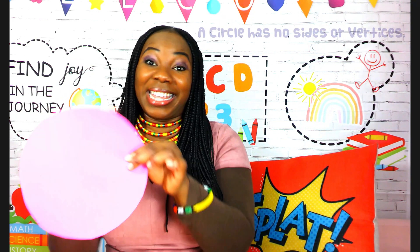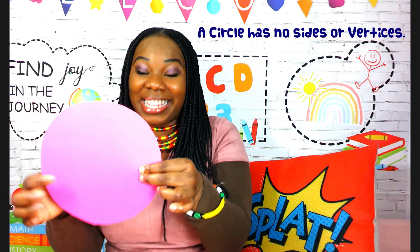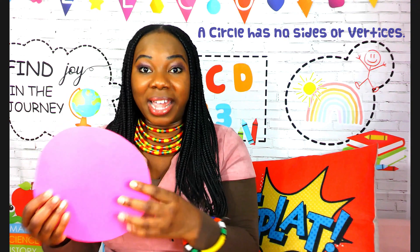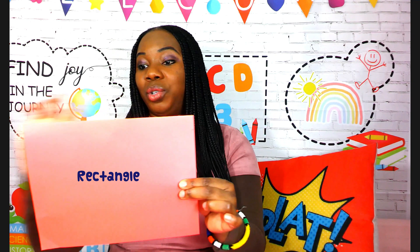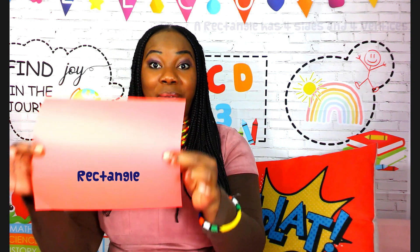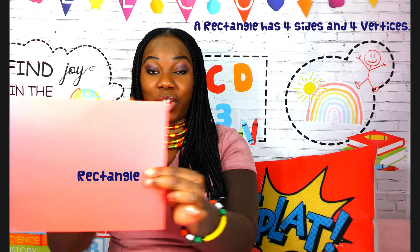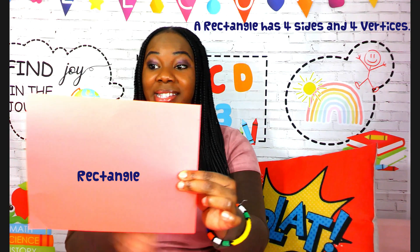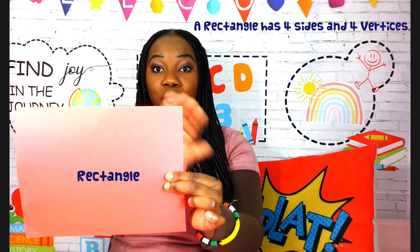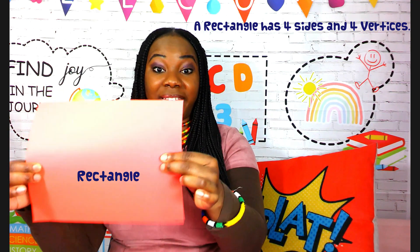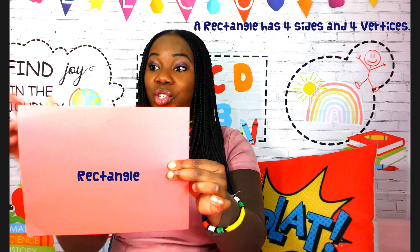They can clearly understand that the circle is continuous and they can see that the circle has no sides and no vertices. The same applies to a rectangle — an elementary learner can see clearly that a rectangle has four sides, two long sides and two shorter sides, and they can clearly see that it has four vertices as well.